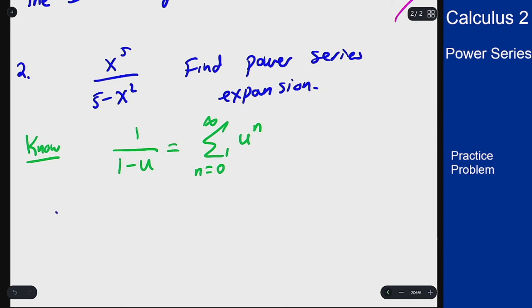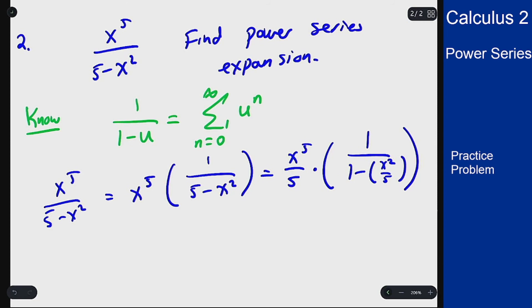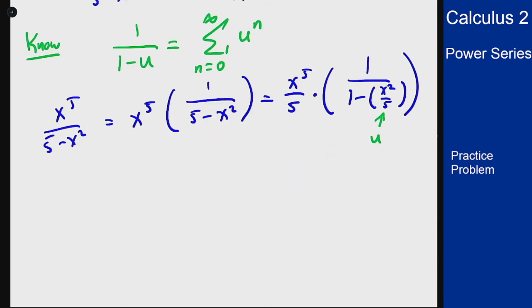I can write x^5 / (5-x^2) as x^5 times 1/(5-x^2). That puts the 1 on top. Then I can factor a 5 out of the bottom and put that under the x^5. So I'll have (x^5/5) times 1/(1 - x^2/5). This right here is going to be our u, so I can use my power series expansion to expand out that parenthesis.